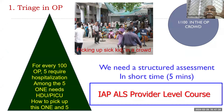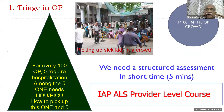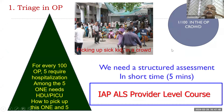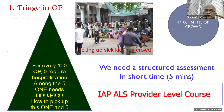Every hospital OP is very busy — government, public sector, private sector. On average, out of every 100 patients in OPD, 5 will require hospitalization and one may require ICU care. There is a red circle somewhere in that crowd — we have to search and find it, and it is very difficult. We need a structured assessment to identify a sick child in a short time, maybe three to five minutes only. Nobody can take more than five minutes in an OP. That is what the IAP ALS course teaches us — how to pick up sick children from a larger crowd.